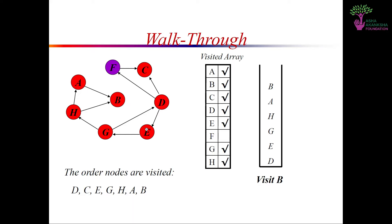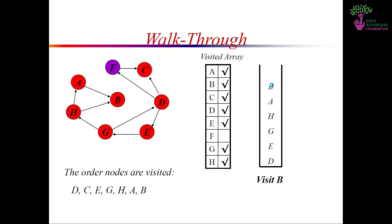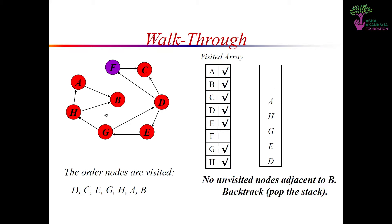Now that we have visited C, we check again for where we can go from C. There is no arrow pointing out of C — no node adjacent to C — so we cannot continue further from C. We have to backtrack to D. We pop C out of the stack, and C has been removed. Now we just have D in the stack.